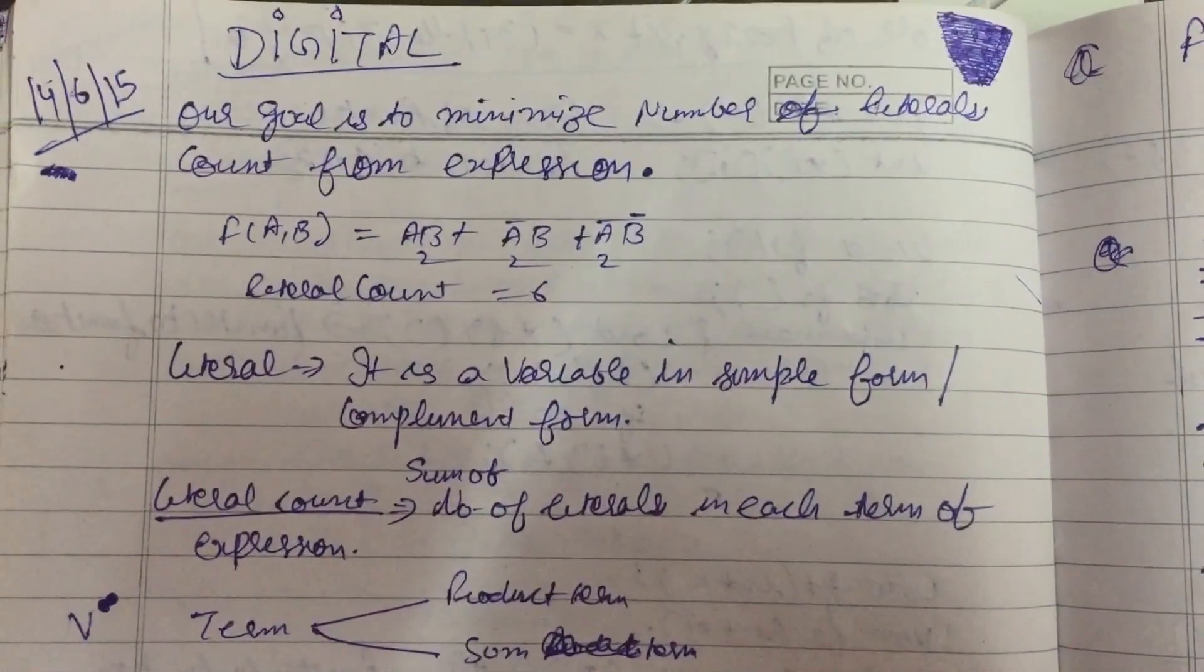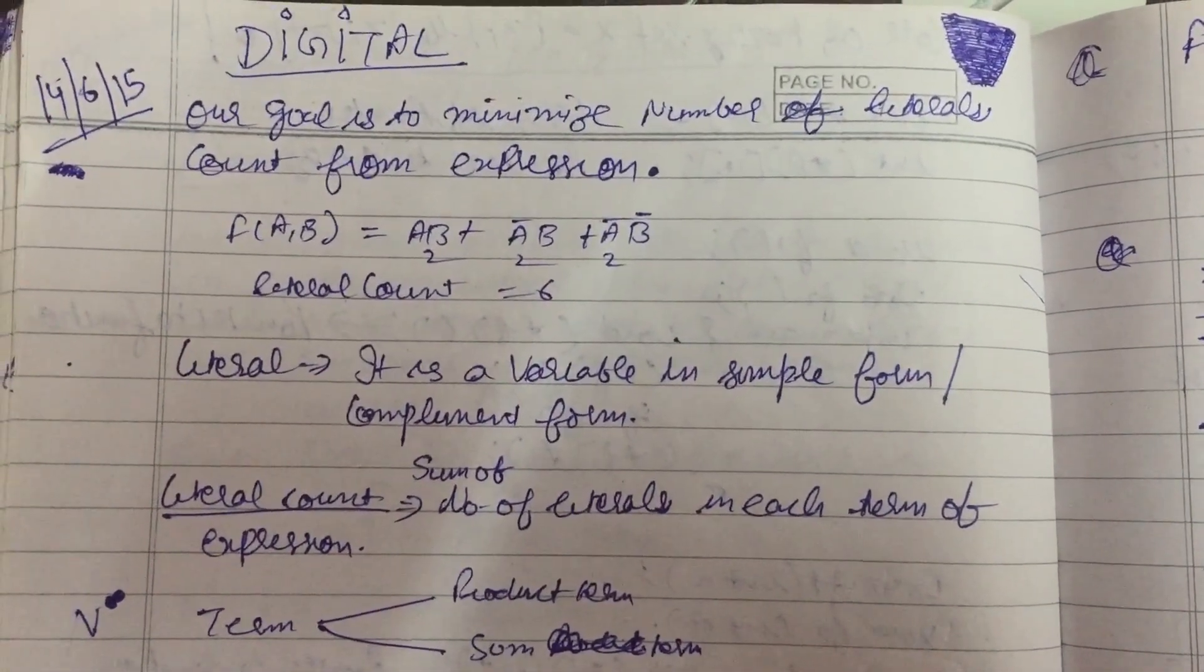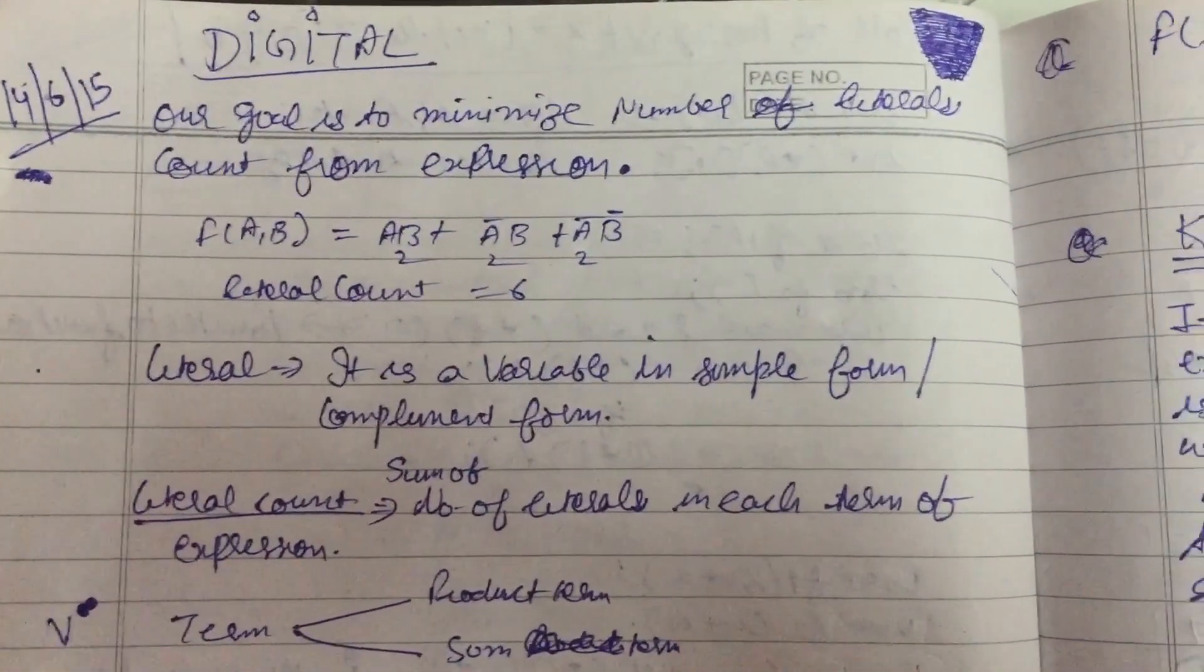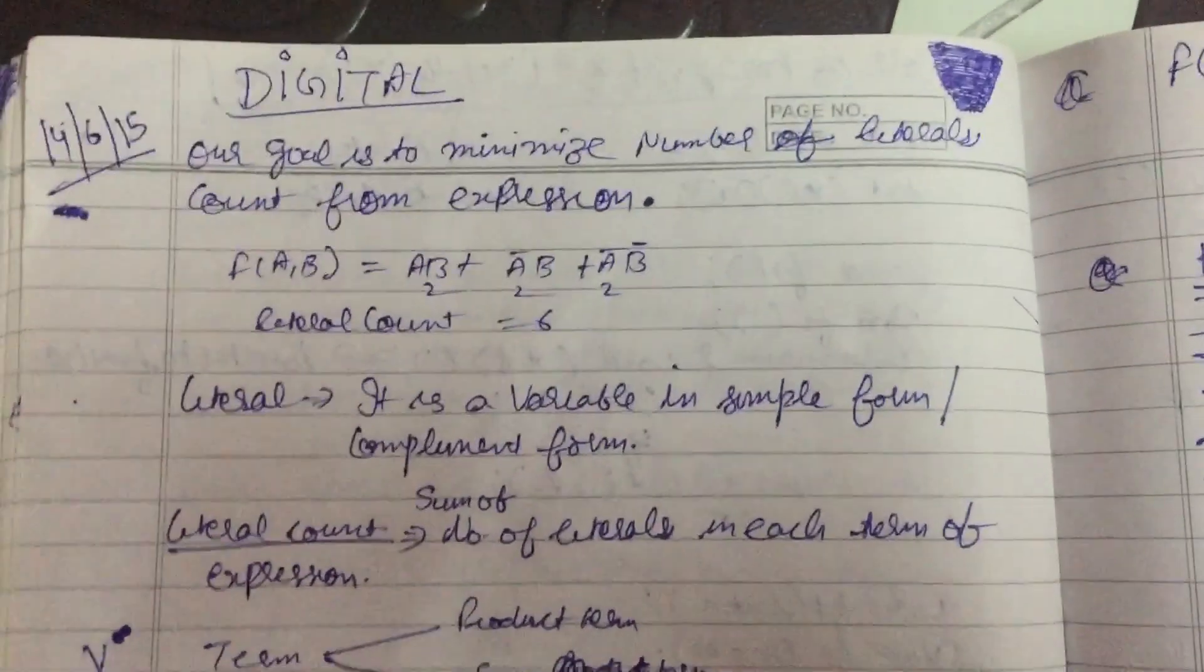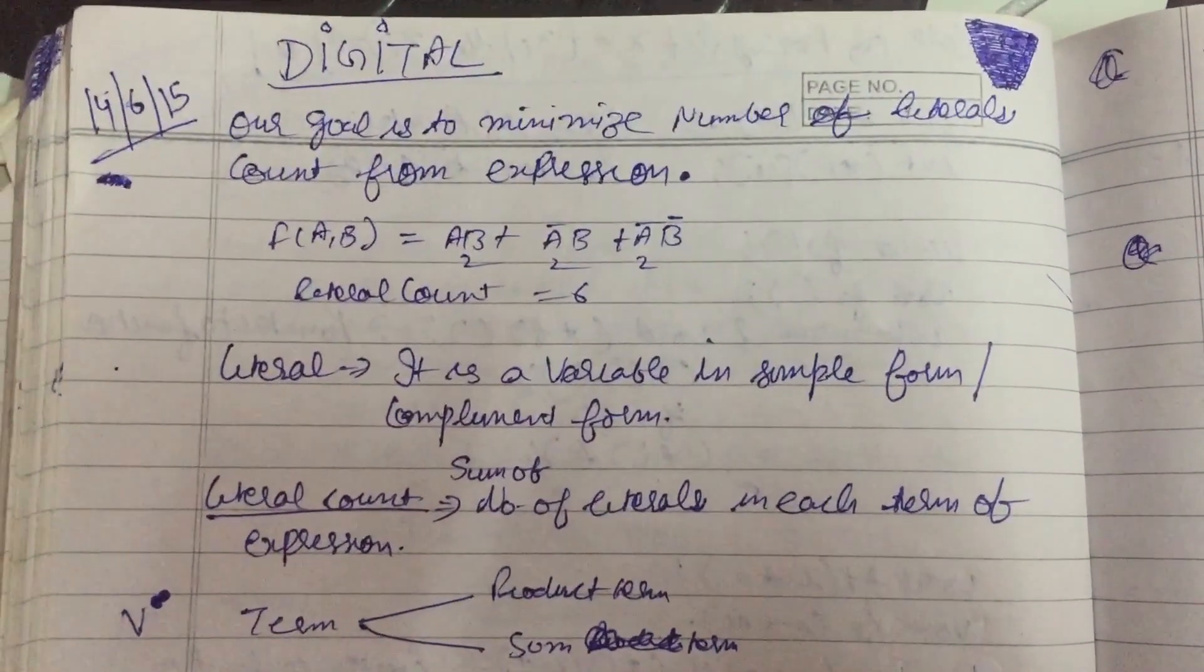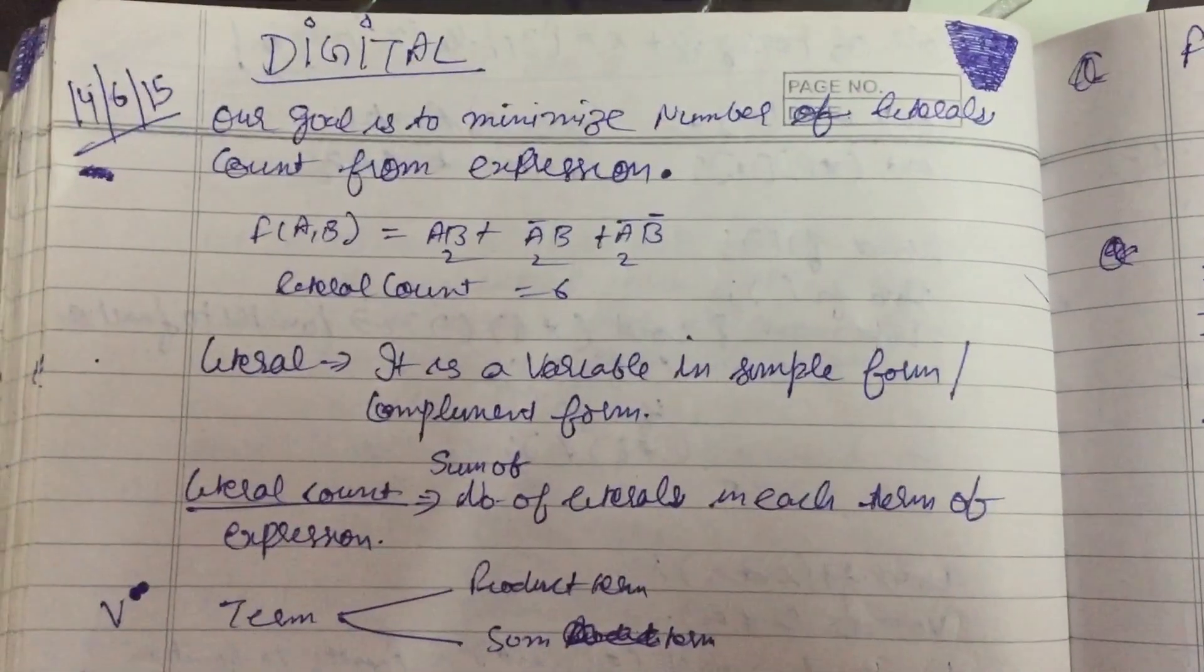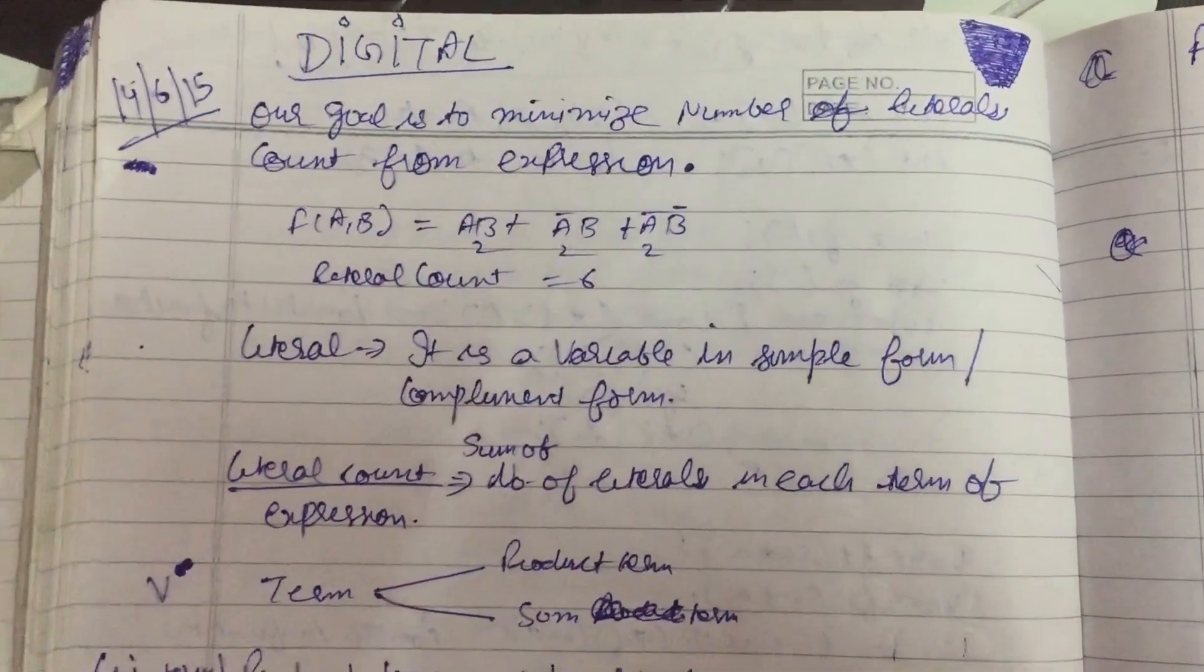So here we are, the topic of today on K-map. We have already discussed about K-map, so let's talk about why we use K-map. Basically, it is used to minimize the number of literals count from expression.